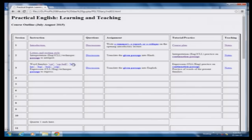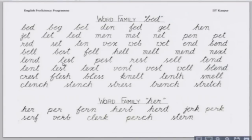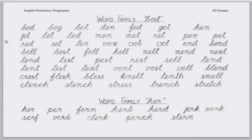Next we have two word families together. Mohita, from the top. Bed, beg, bet, den, fed, get, hen. Next: jet, let, led, men, met, net, pen, pet.